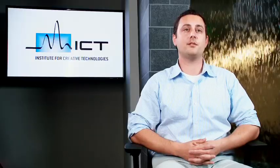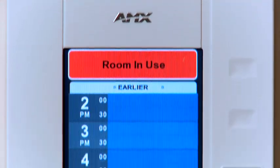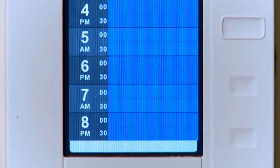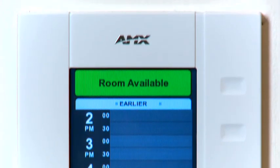Outside of each room at USC ICT, you will find a 4.2-inch AMX touch panel installed in portrait mode. If the room is in use, the touch panel will illuminate in red. If the room is available, it will illuminate in green.